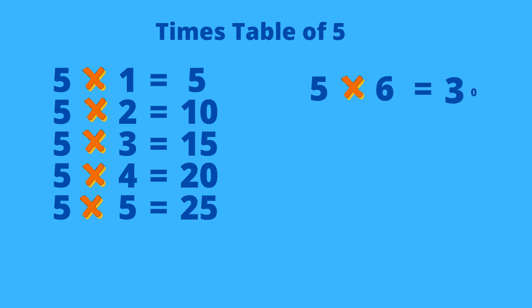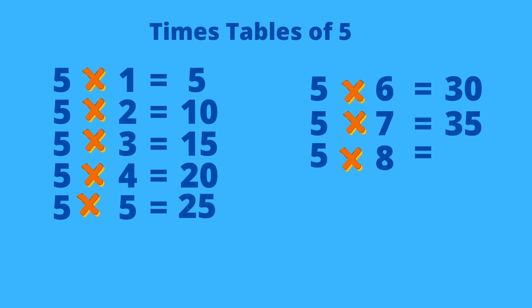5 times 6 equals 30, 5 times 7 equals 35, 5 times 8 equals 40, 5 times 9 equals 45, and finally 5 times 10 equals 50.